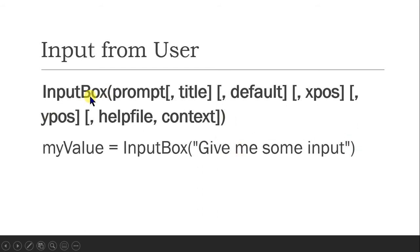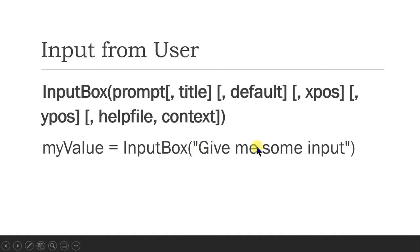When we talk about the InputBox formula, there is a prompt, a title, default, xpos, y position, helpfile, and context — a few optional parameters. Right now we are not going into all of these. The objective is that if we say 'give me some input,' that will be the input. Title can be changed, default value can be changed. Square brackets indicate optional parameters.